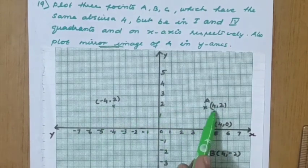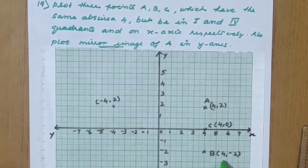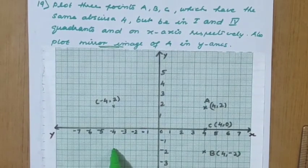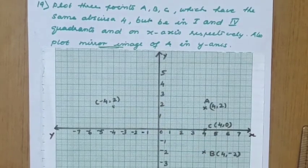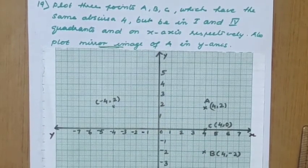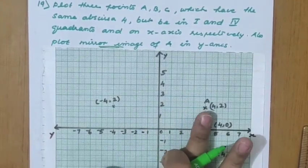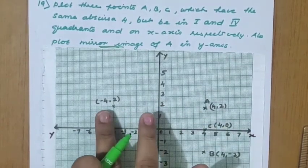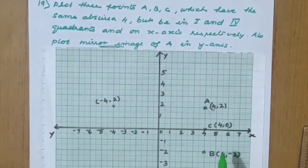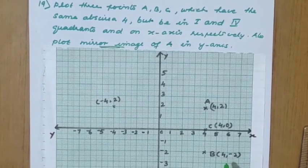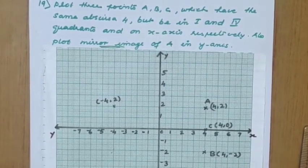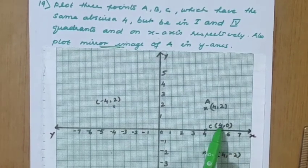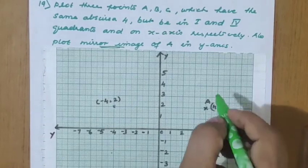Similarly, the mirror image of B (4, −2) with respect to the y-axis is (−4, −2). The mirror image of C (4, 0) would be (−4, 0). For any point (4, 4), the mirror image with respect to the y-axis would be (−4, 4). In reflection across the y-axis, only the x-coordinate sign changes.